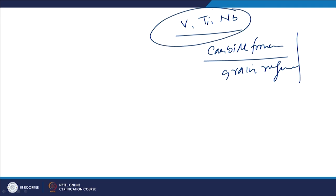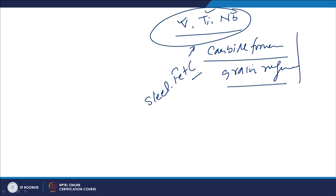Since these are very strong carbide formers, they help in pinning down grain growth and grain boundary movement, which aids in grain refinement. Whenever these elements are present in steel — a combination of iron plus carbon — their high affinity for carbon causes them to form carbides such as vanadium carbide, titanium carbide, or niobium carbide. These carbides are very stable.